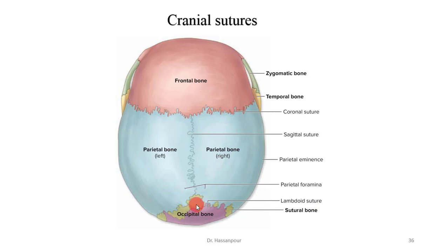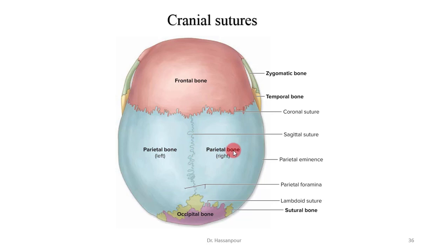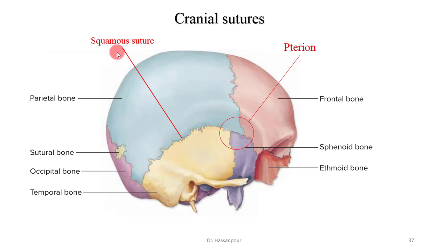The sagittal suture extends between the superior midlines of the coronal and the lambdoid sutures. It lies in the midline of the cranium along the mid-sagittal plane and is the articulation between the right and left parietal bones. The squamous suture on each side of the skull articulates the temporal bone and the parietal bone of that side. The squamous part of the temporal bone typically overlaps the parietal bone.